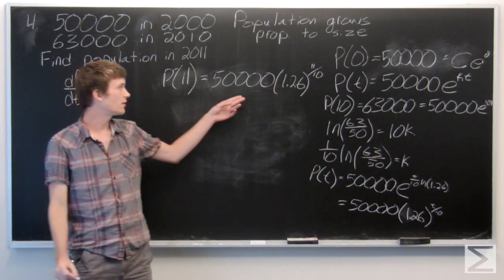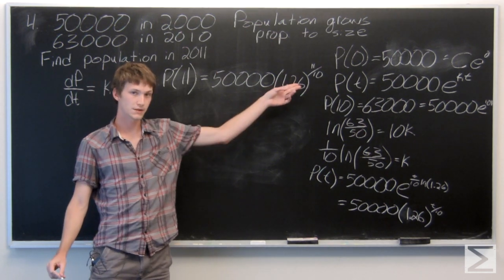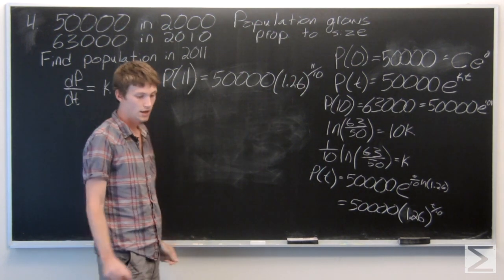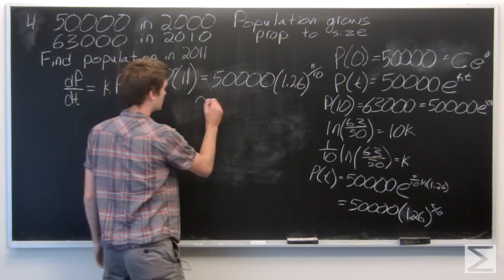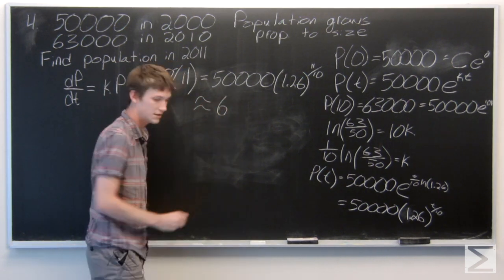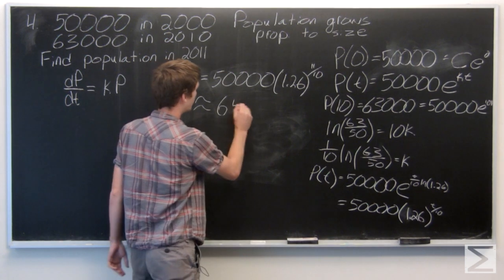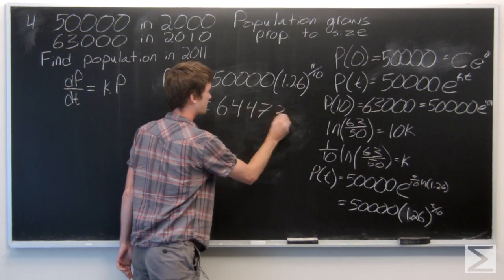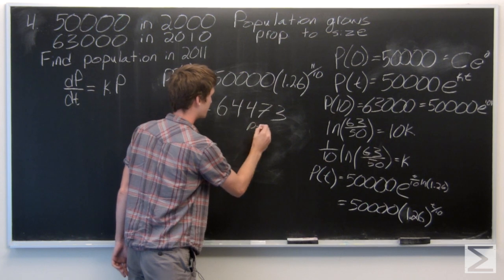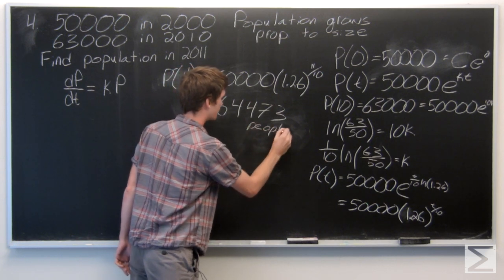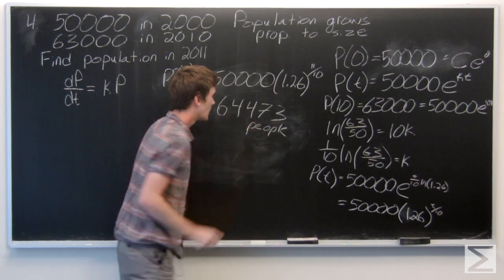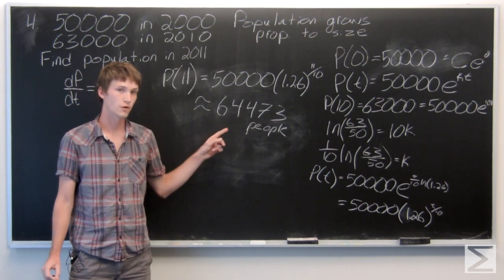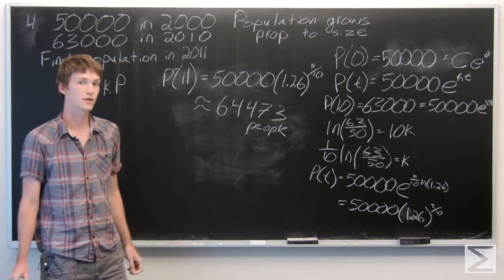Plugging in t equals 11, we get 50,000 times 1.26 to the power of 11 over 10, which is about 64,473. So we will have a population of approximately 64,473 in the year 2011.